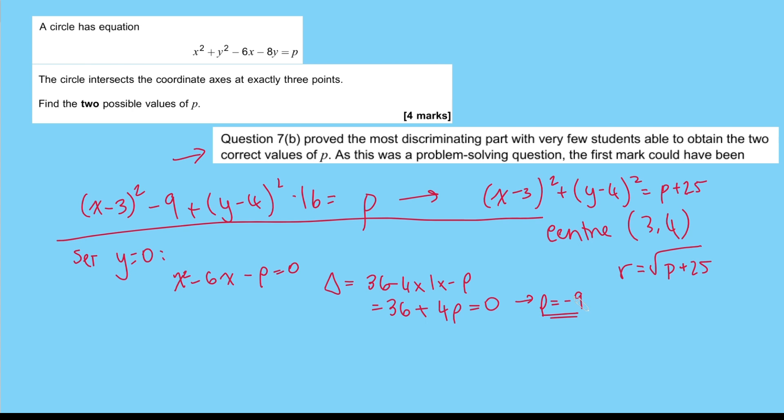Now, the question is, how do we get another value of p here? Now, the trick here is that if you want to have three points of intersection, you could have a tangent, like we said. Or the other possibility is you get two for the price of one.